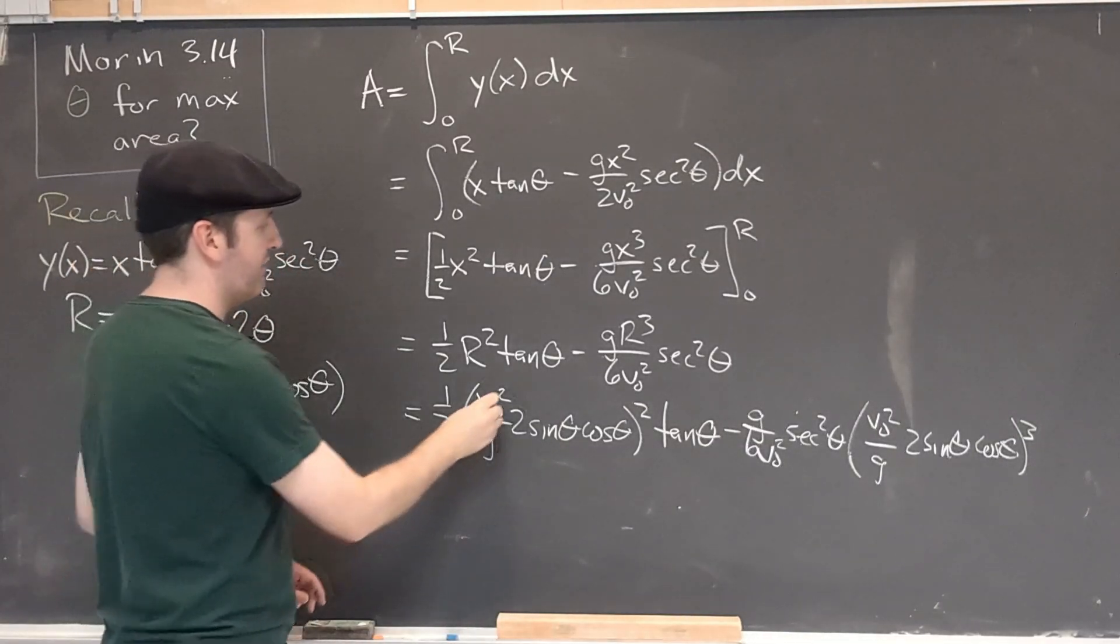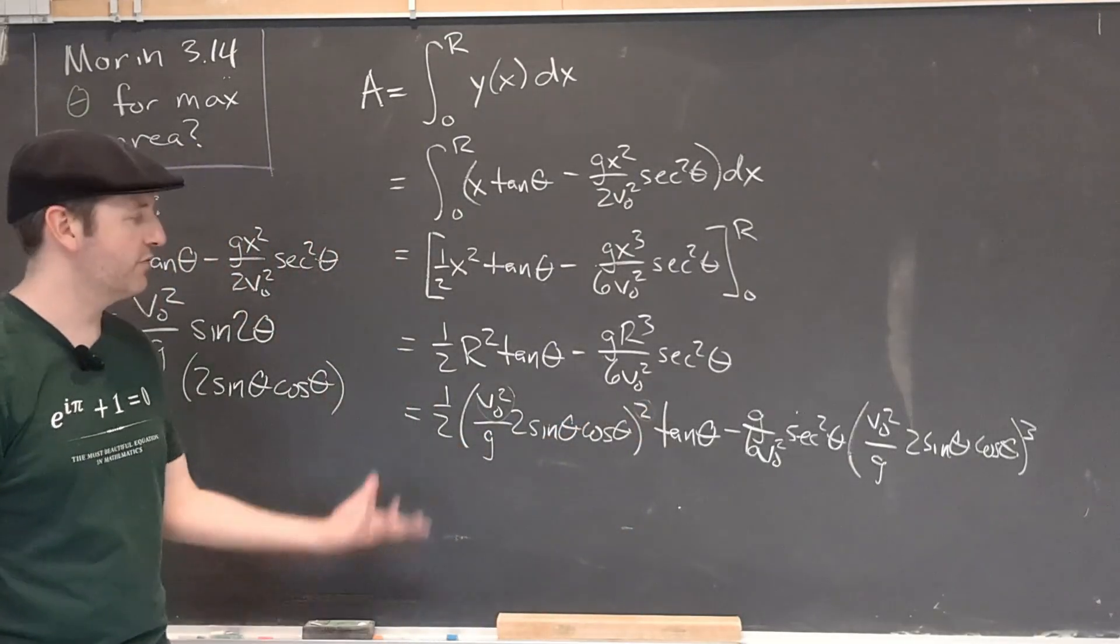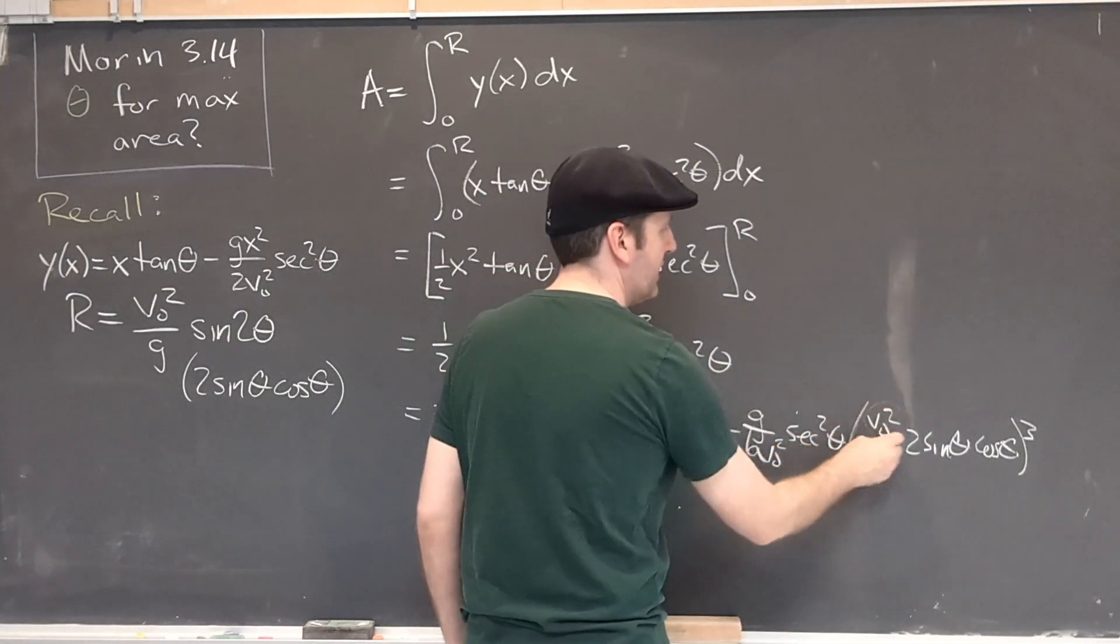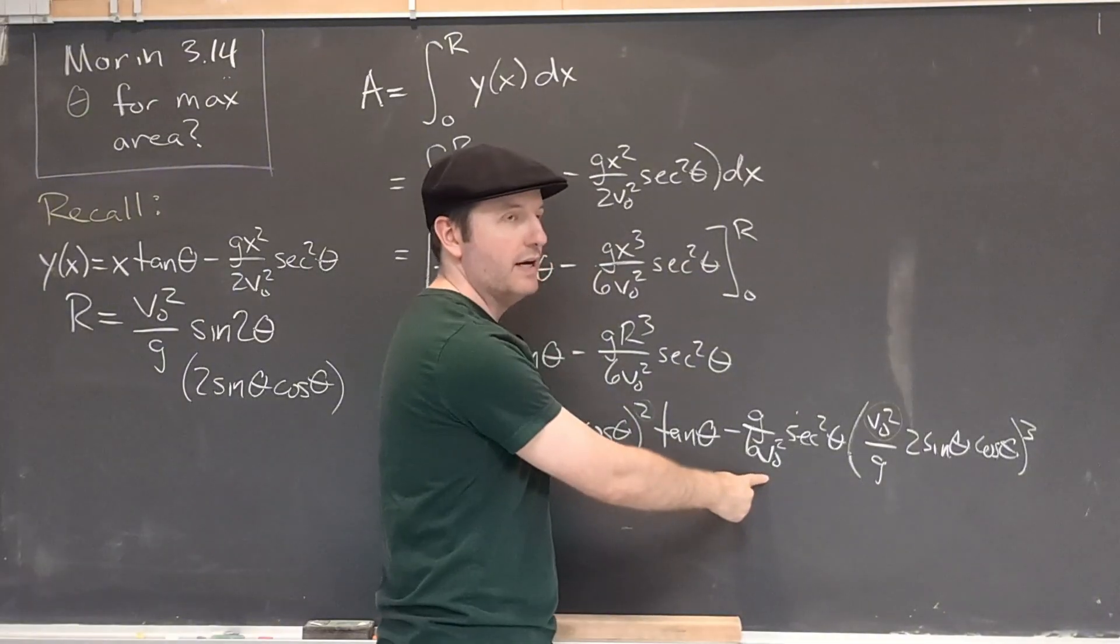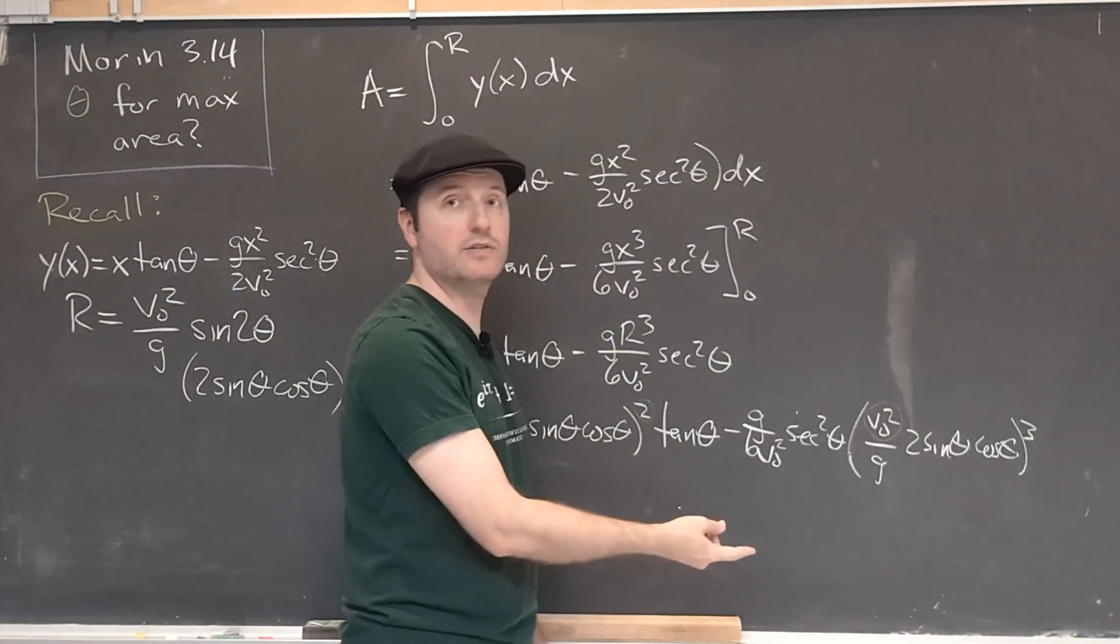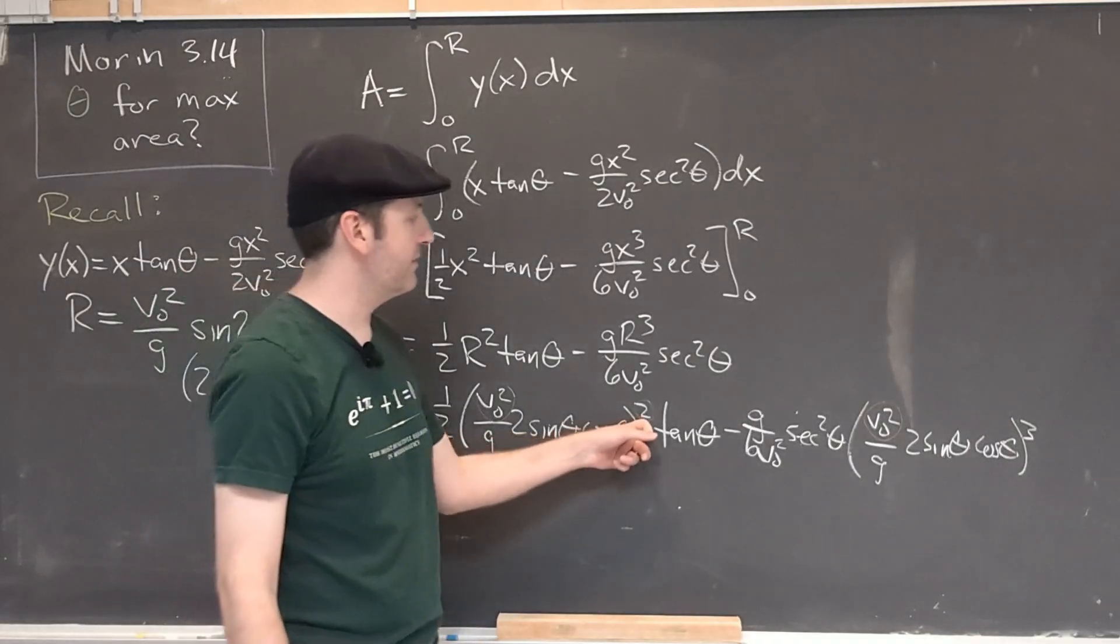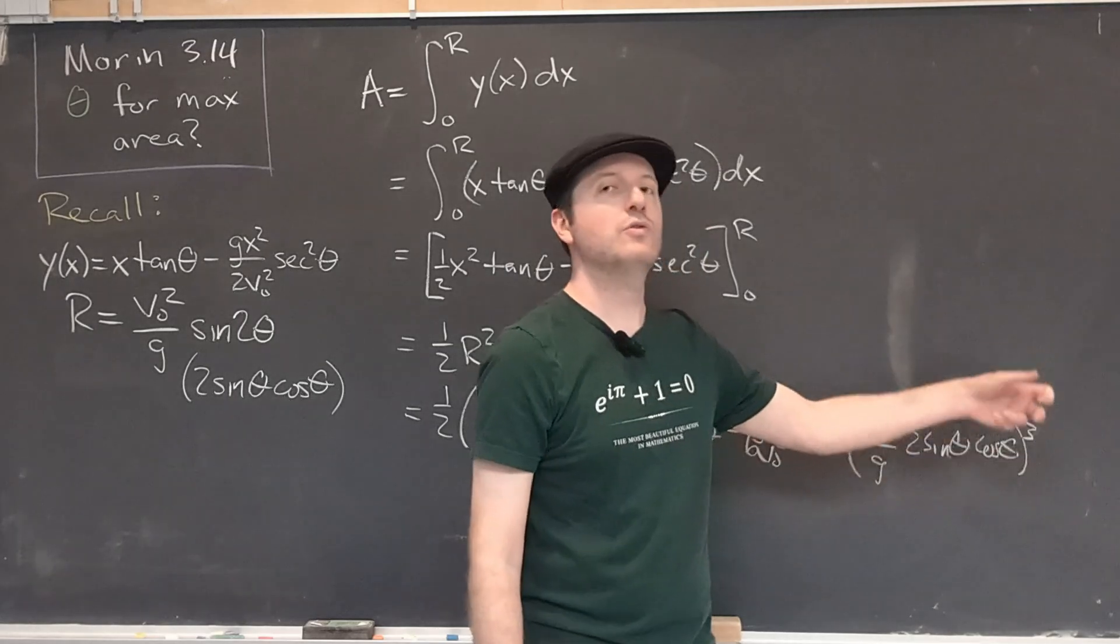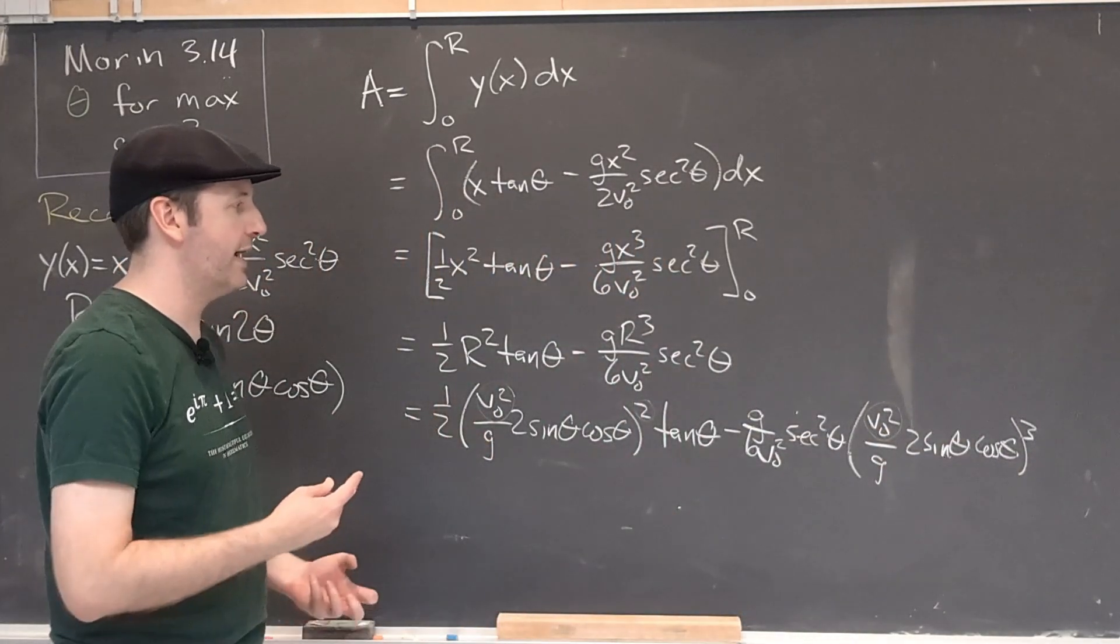For example, I will have a v₀ squared squared from this term, so v₀ to the fourth. And over here, I will also have v₀ squared cubed divided by v₀ squared. So that'll be another v₀ to the fourth. For the g's, I have a g squared in this denominator. And I have a g times a 1 over g cubed, which is also a 1 over g squared. So I can factor that out.